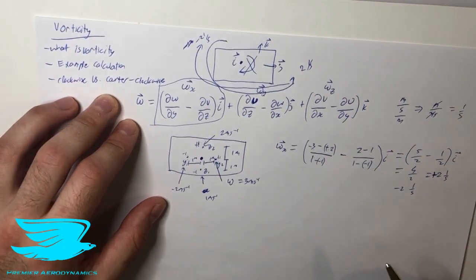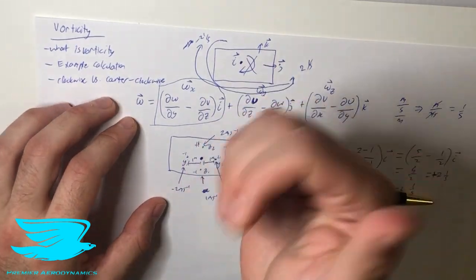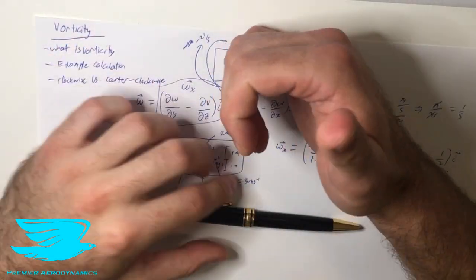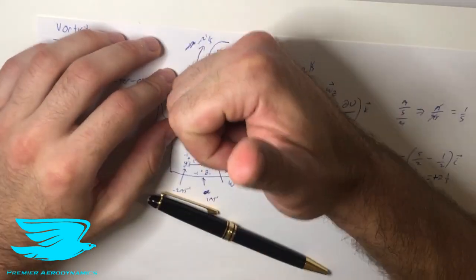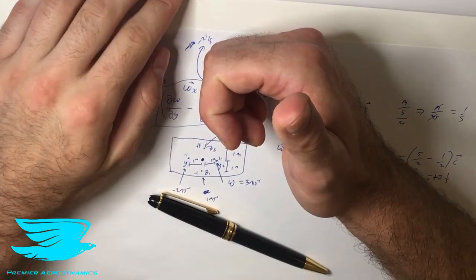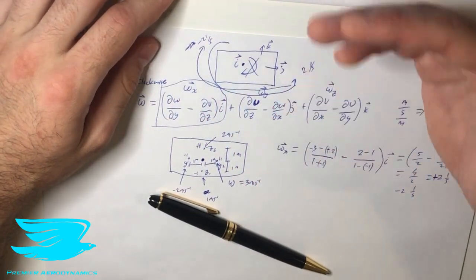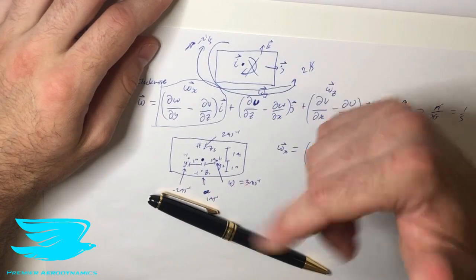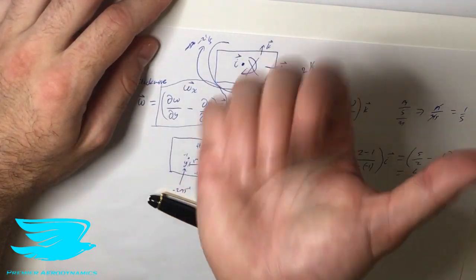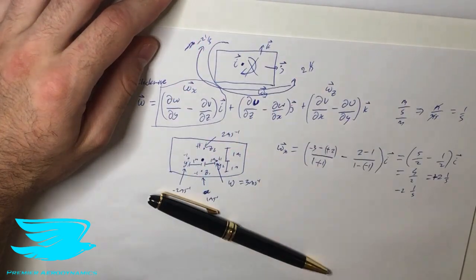The positive and negative signs refer to which direction the rotation is occurring. For the I direction, positive is counterclockwise when the thumb comes out of the page. Put your thumb in that direction and the way your fingers curl is positive. For J, put your thumb to the right and rotate around — that's positive. For K, put your thumb up and rotating around is positive. So that is vorticity.